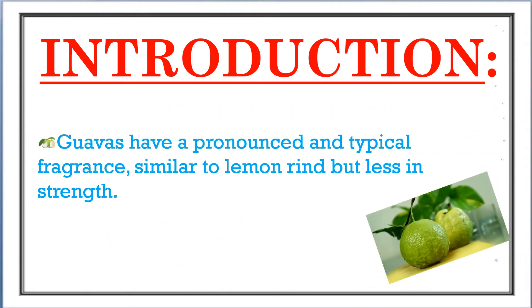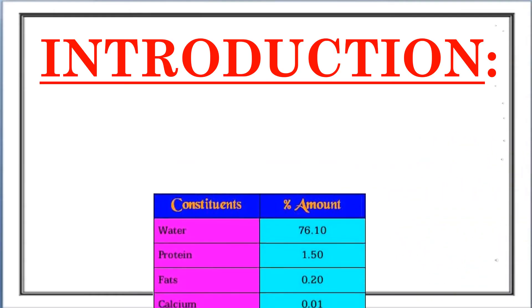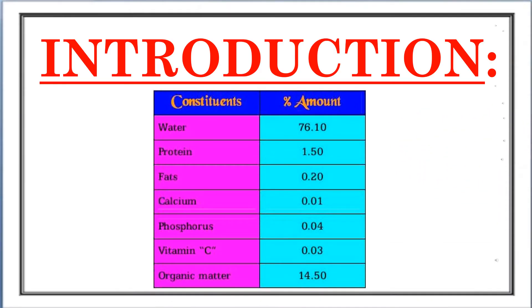Guavas have a pronounced and typical fragrance similar to lemon rind but less in strength. Constituents of guava and its amount: water 76.10, protein 1.50, fats 0.20, calcium 0.01, phosphorus 0.04, vitamin C 0.03, organic matter 14.50.